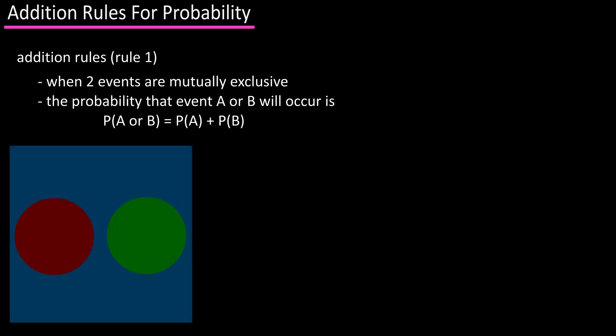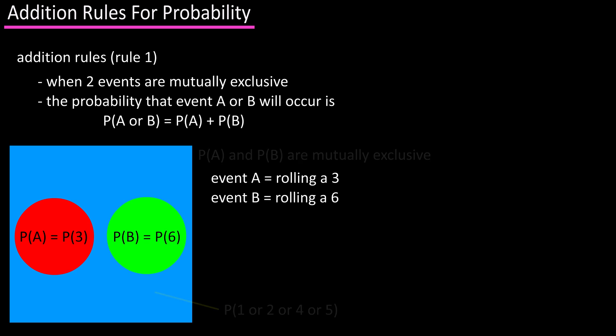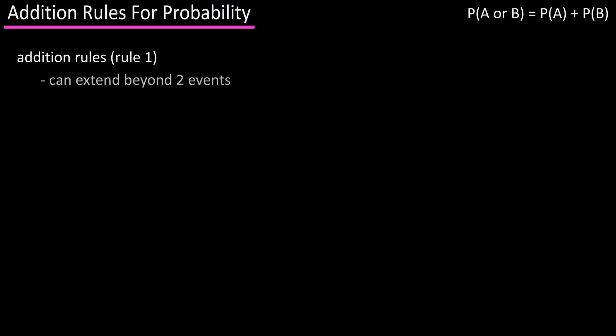For instance, going back to our die roll example, where event A is rolling a 3 and event B is rolling a 6. So again, they are mutually exclusive. In this case, we would use this rule. So probability of A or B equals 1 over 6, the probability of A, plus 1 over 6, the probability of B. And this ends up being 1 over 3, or 0.333, or 33.3%.